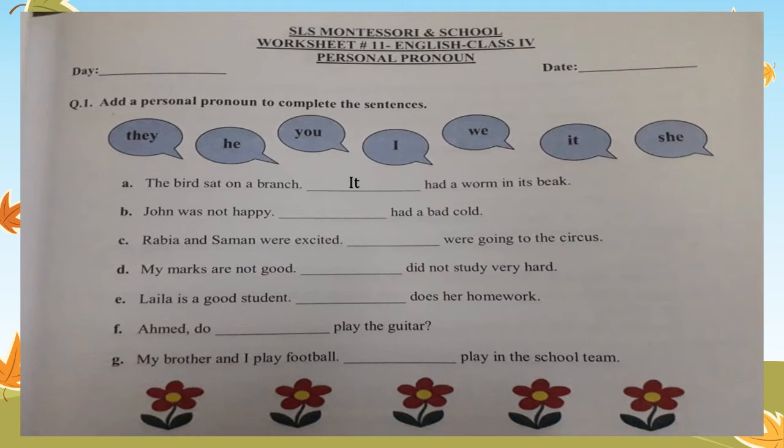'John was not happy. Blank had a bad cold.' John is a boy, so which personal pronoun is going to replace John? He. John was not happy — he had a bad cold. And you are going to continue doing the whole exercise like this.